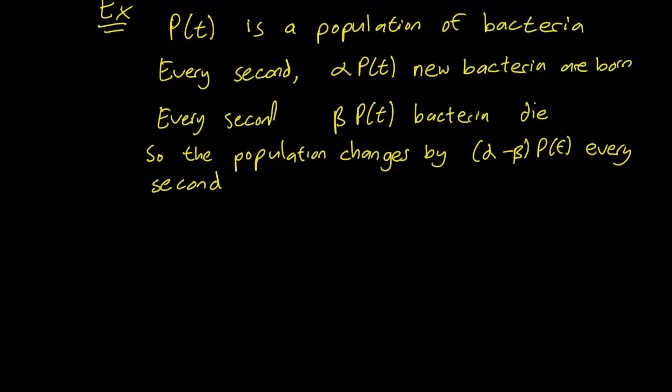Now we know the rate where the population of the bacteria changes, so that's dP over dt. Right? So this is the rate of change of the population with respect to time.